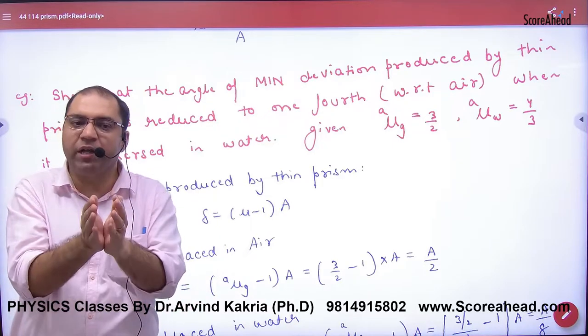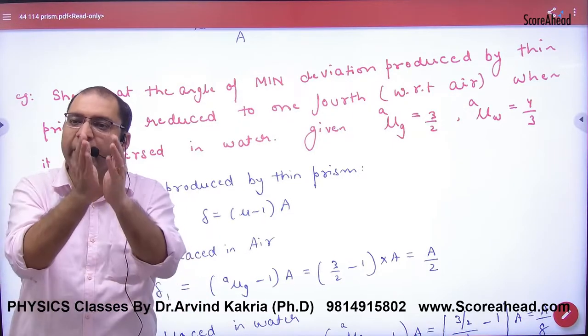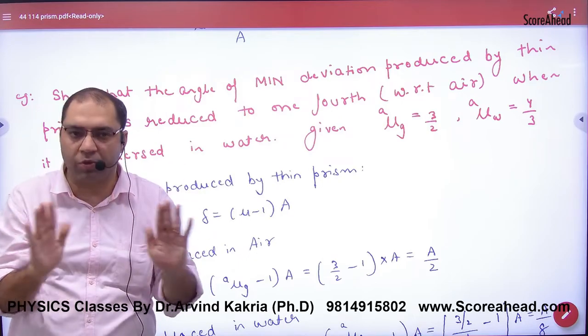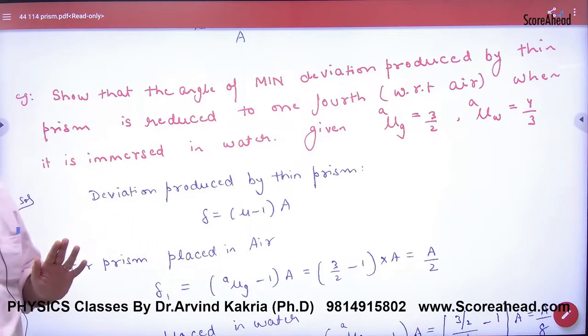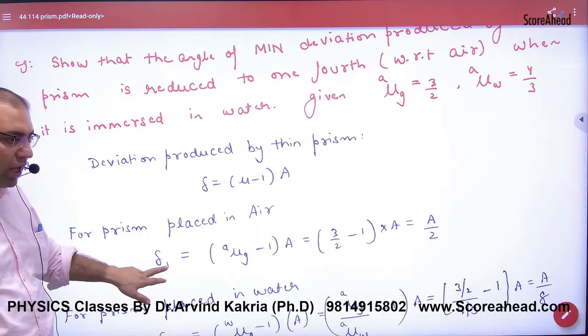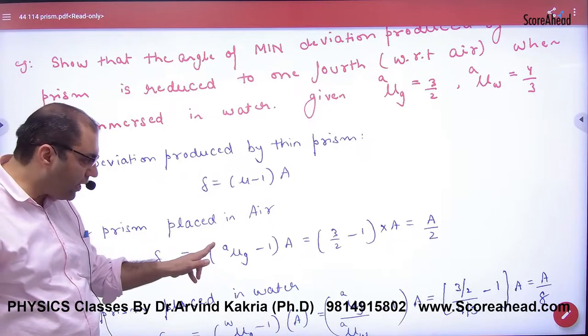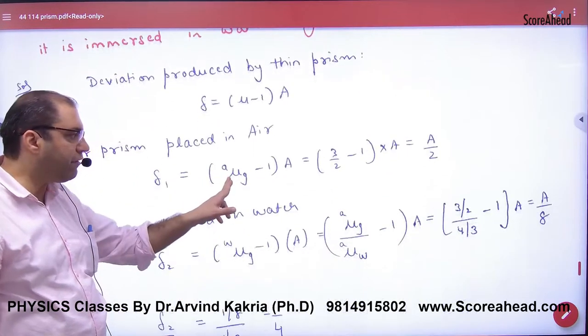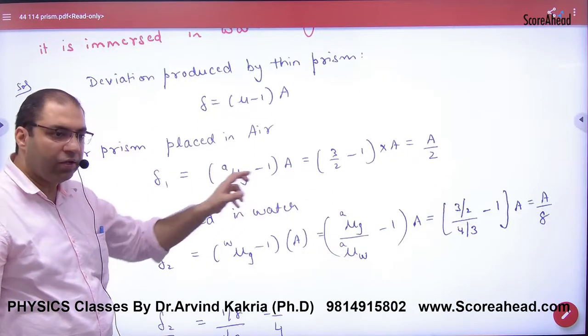So you have to show that the deviations will be different, different by one-fourth. This is the question. You have given thin prism, so take thin prism. One time deviation when glass is applied in air. You have to know the refractive index of glass is 3/2. So this is called delta.